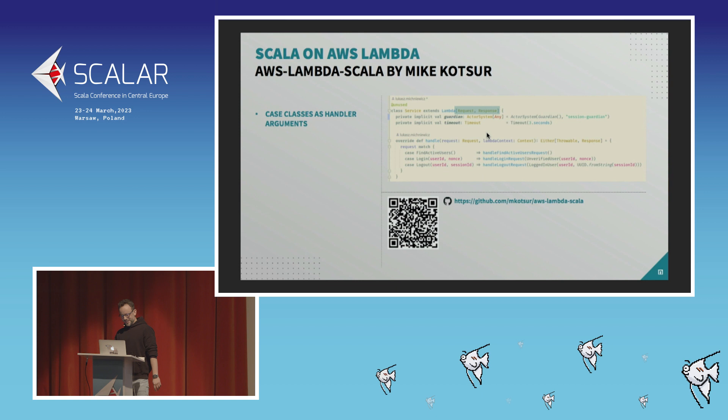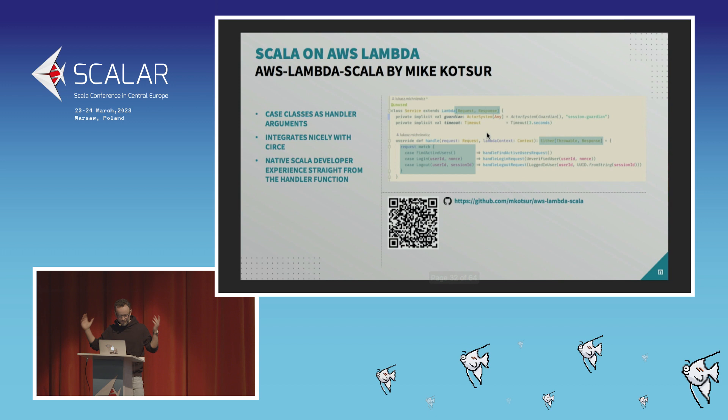I found a very nice library I want to give a shout-out to: AWS Lambda Scala. It gives you a small compatibility layer that achieves a native Scala developer experience. It integrates with Circe first of all, and gives you something really nice to work with from the start.